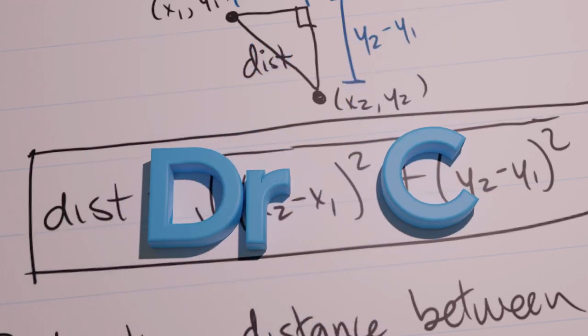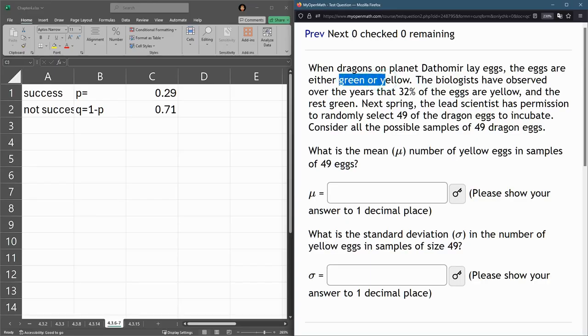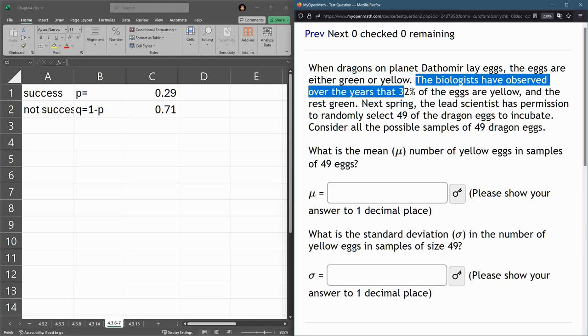We're looking at dragon eggs here, and they're either green or yellow. So this is perfect for binomial because there's two outcomes. One is going to be success and one is failure. Now in this question, the biologists observe over the years 32% of the eggs are yellow and the rest are green.